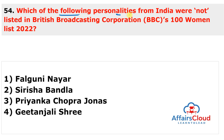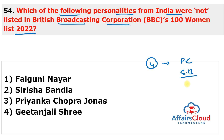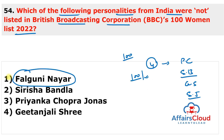Question 54: Which personality was NOT listed in the BBC 100 Women 2022 list? The name not in the list is Falguni Nayar. The four Indian women featured in the BBC 100 Women 2022 list are actress-producer Priyanka Chopra, aeronautical engineer Shreesha Bandla, Booker Prize author Geetanjali Shree, and social worker Sneha Jawale.